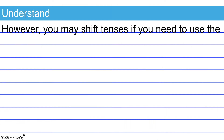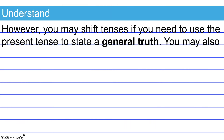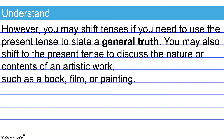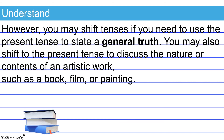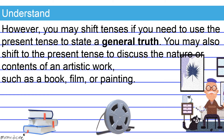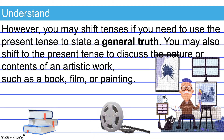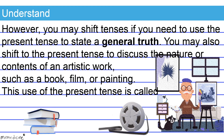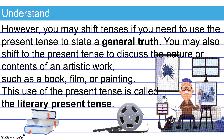However, you may shift tenses if you need to use the present tense to state a general truth. You may also shift to the present tense to discuss the nature or contents of an artistic work, such as a book, film, or painting. This use of the present tense is called the literary present tense.